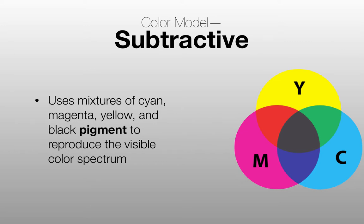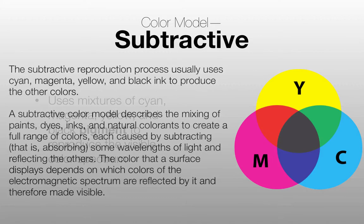Subtractive is sort of the inverse — it uses mixtures of cyan, magenta, yellow, and black pigment to reproduce the visible color spectrum. Black isn't technically part of the model, but it's in your printer because it would be a waste to mix equal amounts of cyan, magenta, and yellow to make black every time you print text. A subtractive color model describes the mixing of paints, dyes, inks, and natural colorants — each caused by absorbing some wavelengths of light and reflecting others. The color a surface displays depends on which colors of the electromagnetic spectrum are reflected by it and made visible. That's how printing works.